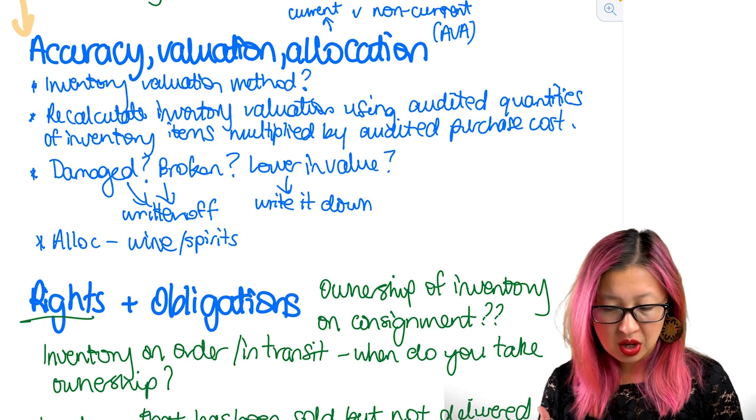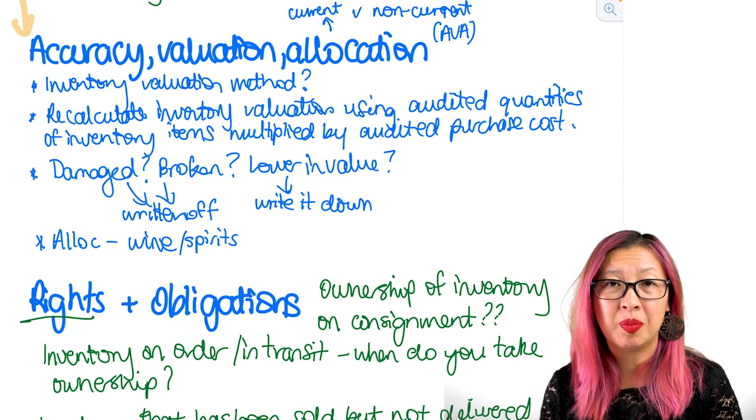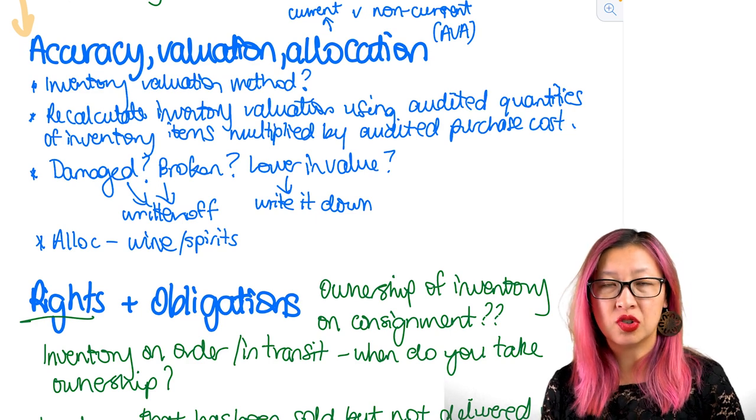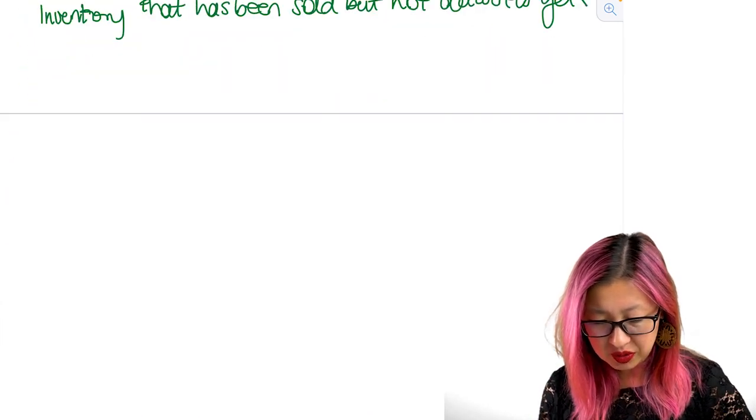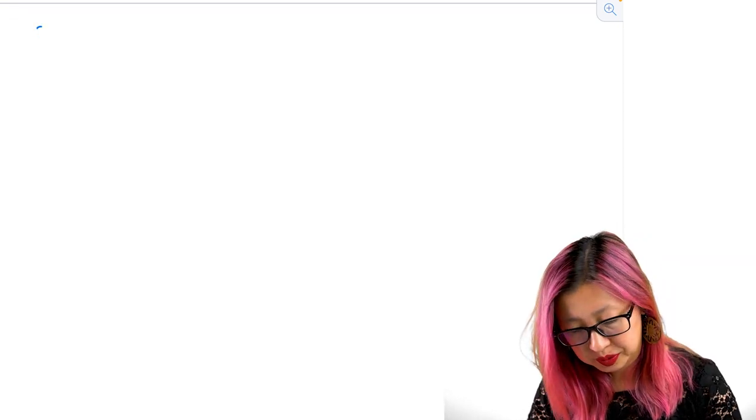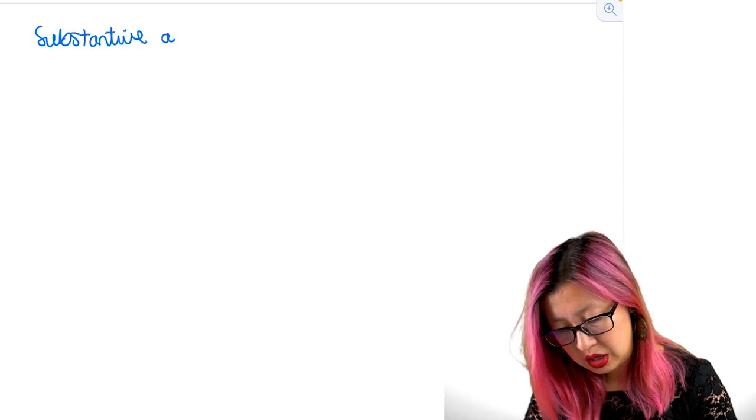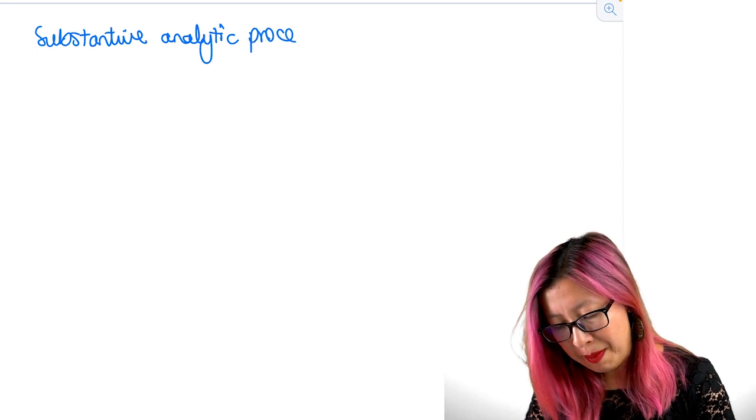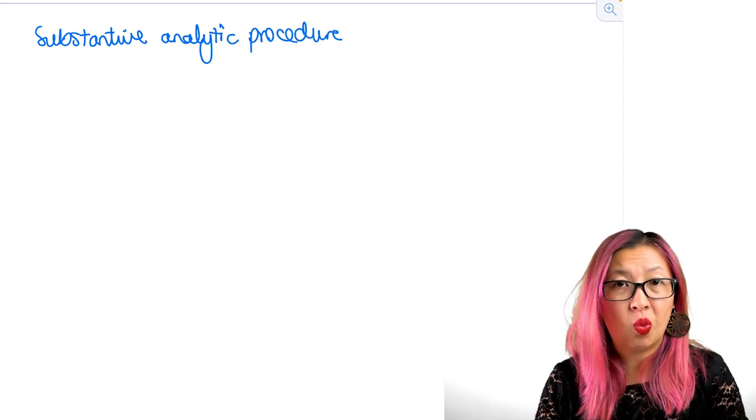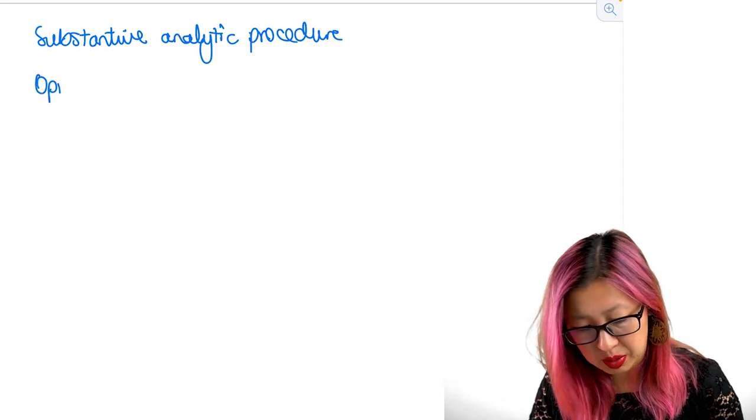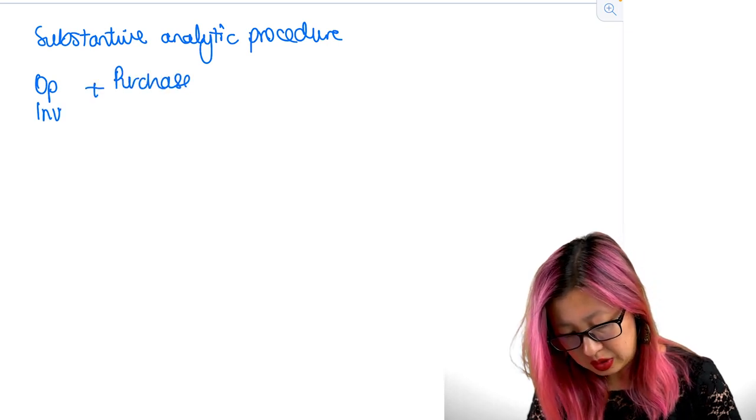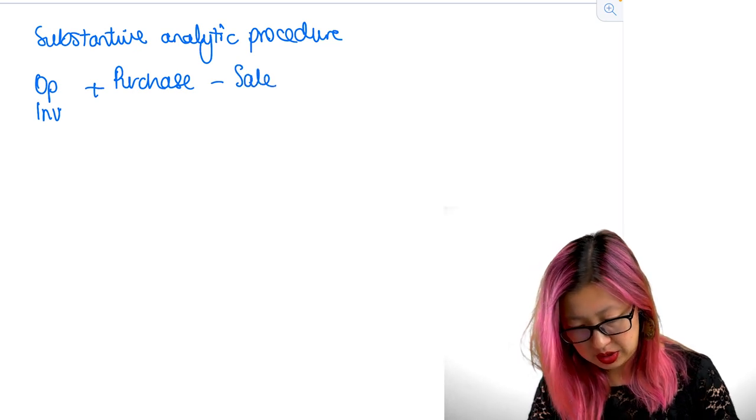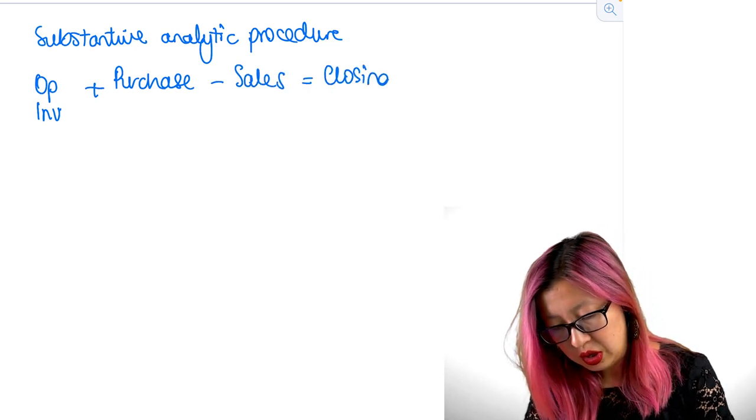Now there was one other test or one other thing that I thought is a really good substantive analytical procedure that works really well with inventory that helps us identify whether we've got an issue with existence or completeness. So substantive analytic would be to use your management accounting information to help you understand whether the numbers look correct. So for example, opening inventory plus what you buy less what you sell should give you the closing inventory value.